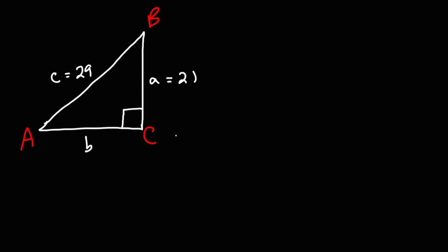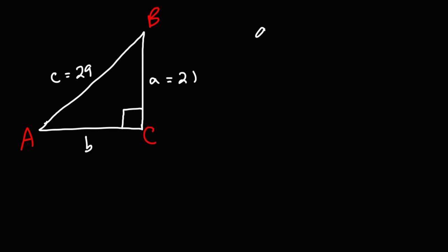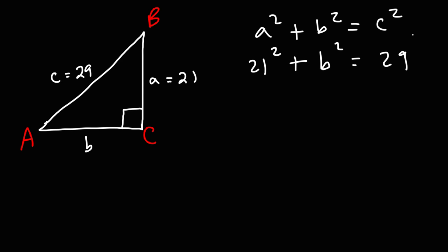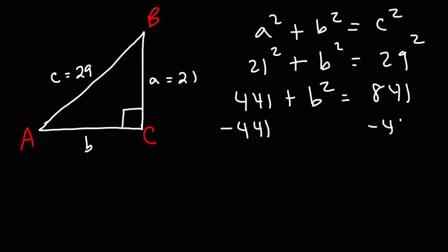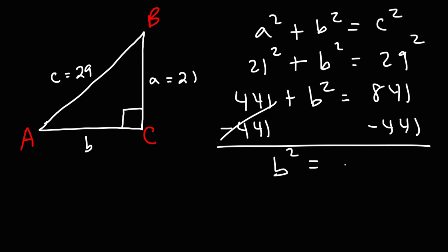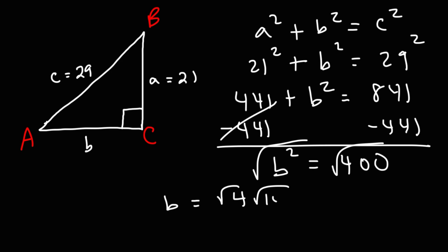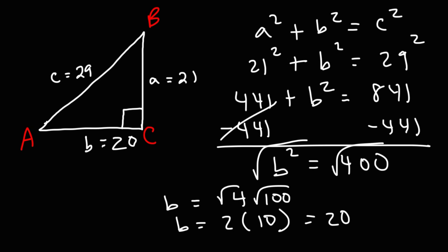The first thing to do is find the missing side using the Pythagorean theorem: A² + B² = C². With A = 21 and C = 29: 21² = 441, 29² = 841. Subtracting 441 from both sides gives B² = 400. The square root of 400: since 400 = 4 times 100, and √4 = 2, √100 = 10, we get B = 20.